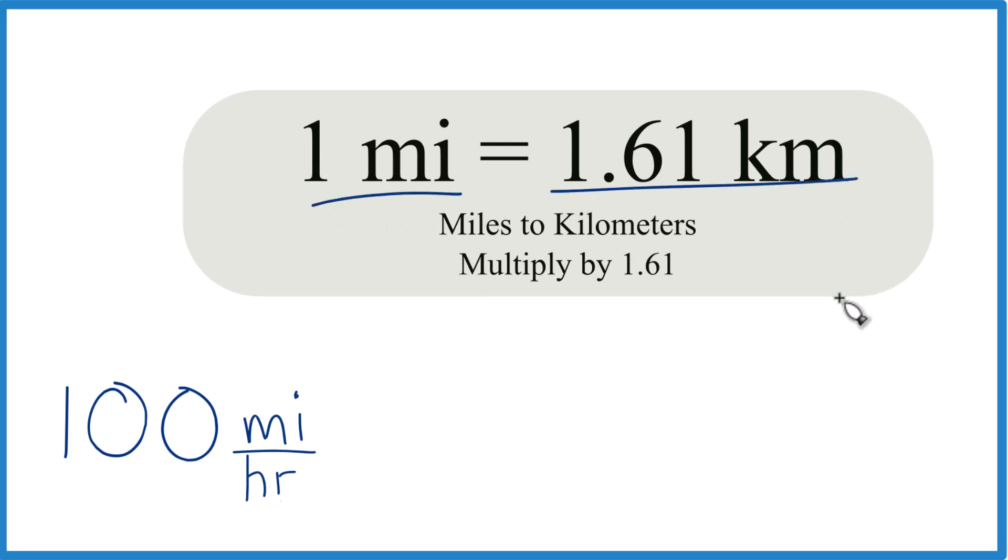If you need more decimal places, you could use 1.6093, or some people just use 1.6 to make it easier. So we're going from miles to kilometers, we're going to multiply by this 1.61 here.